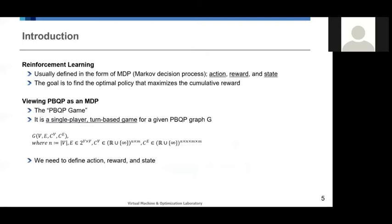To start with, reinforcement learning is usually defined on MDP. That is, the problem has action, reward, and state. The concept of our approach is to view the PBQP problem as a game which is also an MDP. In this game, the player alone wants to allocate colors to the given graph to minimize the cost function. So it definitely can be viewed as a single-player game and a turn-based game of which we will define its action, reward, and state more accurately.